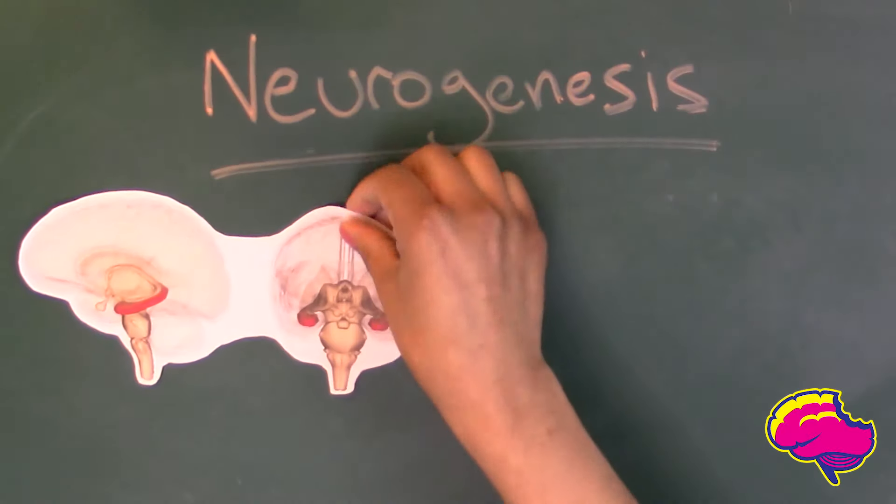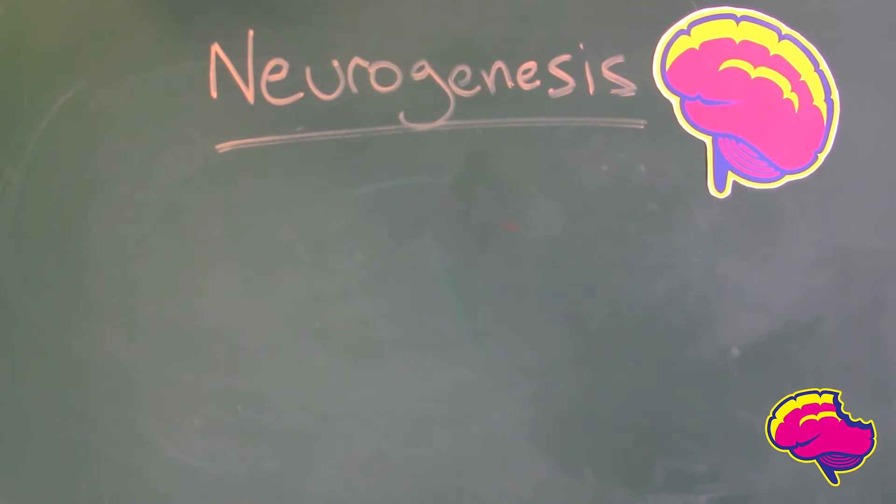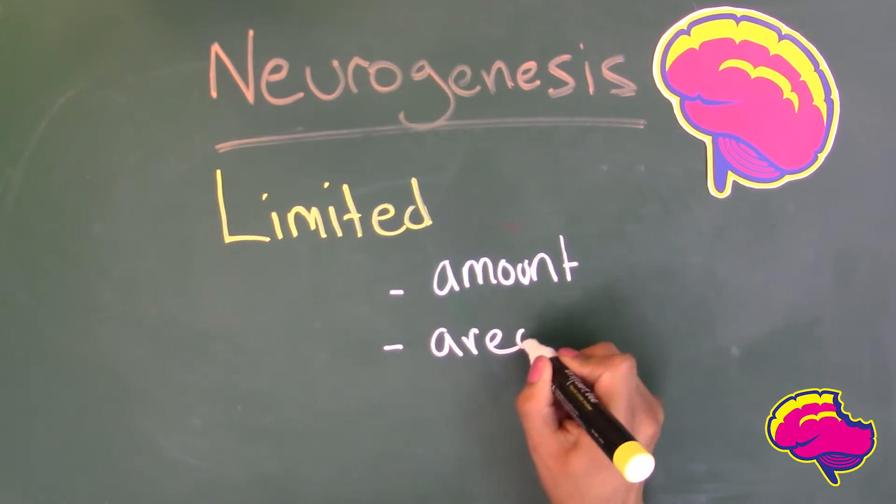However, a recent study has shown that within the adult human hippocampus, neurogenesis does not seem to take place, once again casting doubt on the idea that the adult brain is capable of creating new neurons. So the current consensus is that if neurogenesis does occur in the adult brain, it is isolated to limited amounts and areas within the brain.